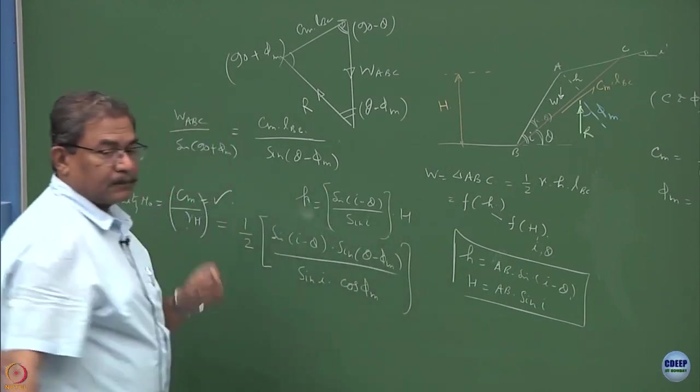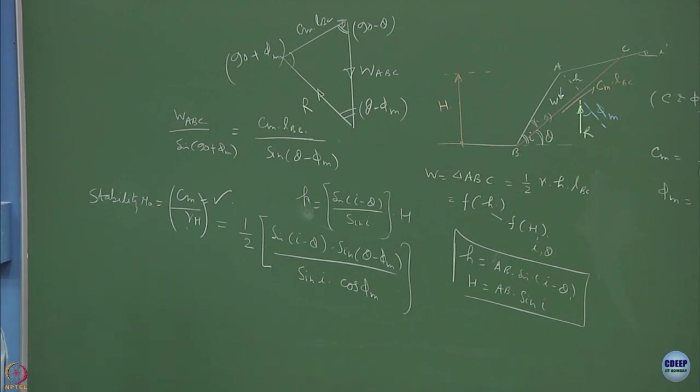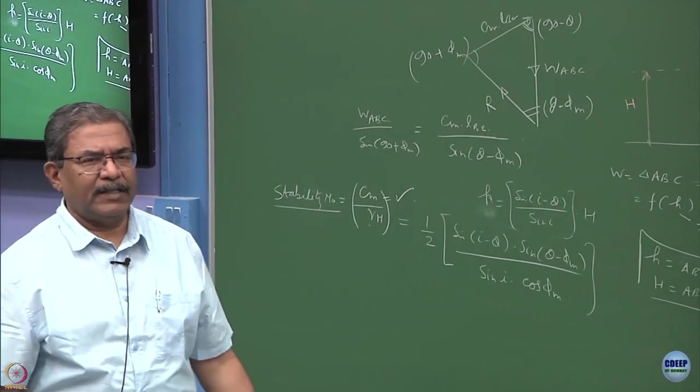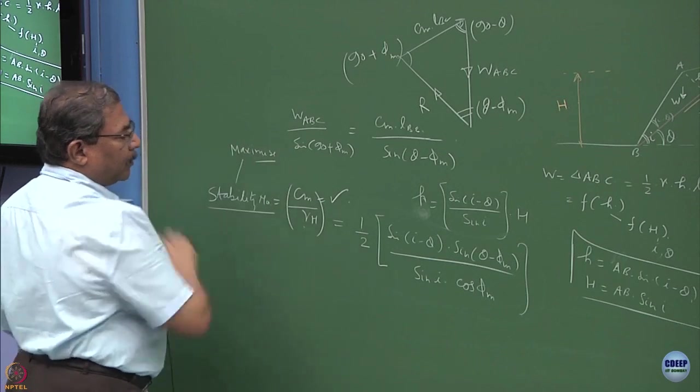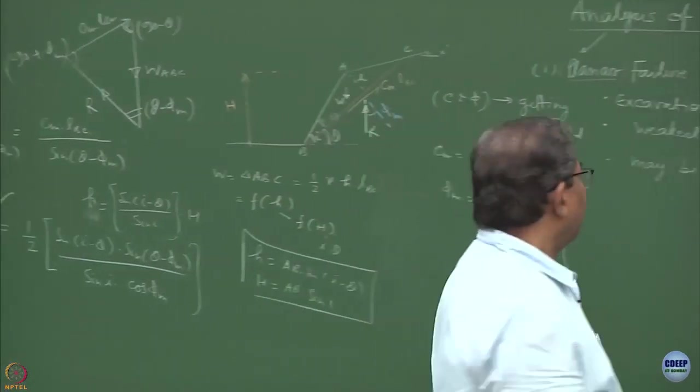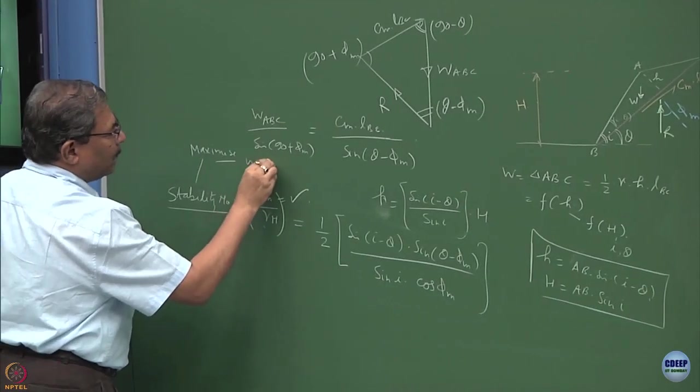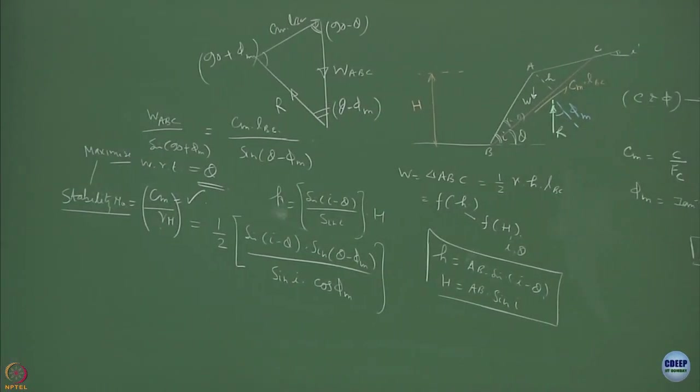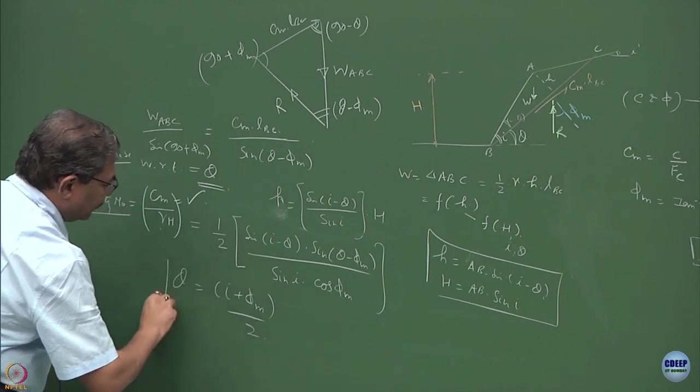Now what do you want to do by obtaining this function? You want maximum stability or you want minimum stability? Both ways I can try. So suppose if I want to maximize this function, what will I have to do? I will have to differentiate this with respect to what? What is the principal unknown here? The principal unknown is the theta value. So that means this has to be maximized with respect to theta. So if you differentiate, what are you going to get? Theta will be equal to i plus phi m divided by 2. Prove this.